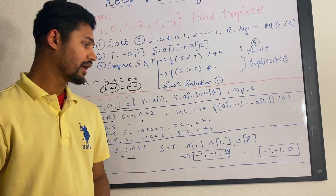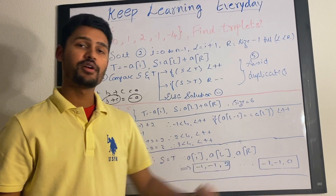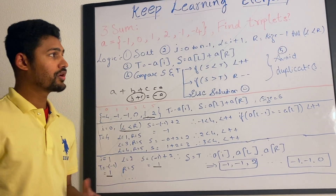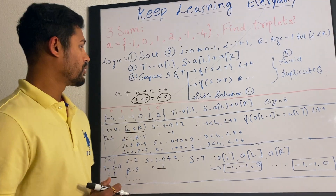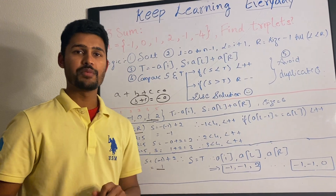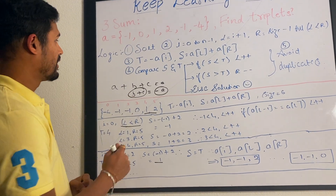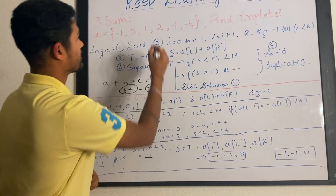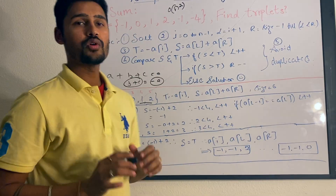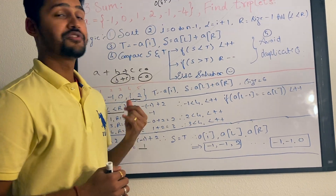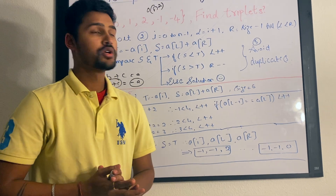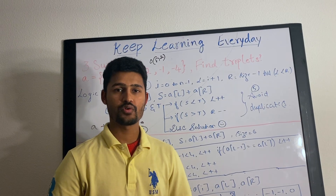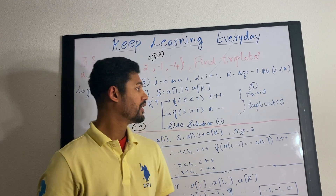Continuing the iteration until I is less than size minus one, you find another triplet. I'll leave that for you to verify, but the two solutions you get are [-1, -1, 2] and [-1, 0, 1]. This is an important problem frequently asked in Microsoft interviews. The time complexity is O(n²) since for every I we loop through the remaining elements. The brute force approach with three loops gives O(n³), so this two-pointer method is more efficient.